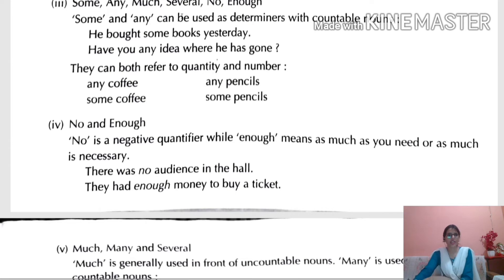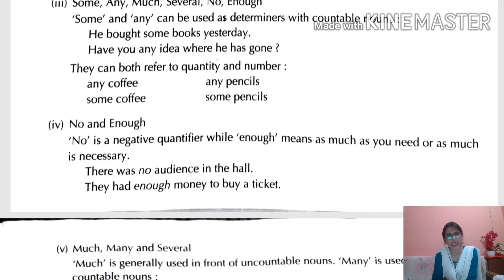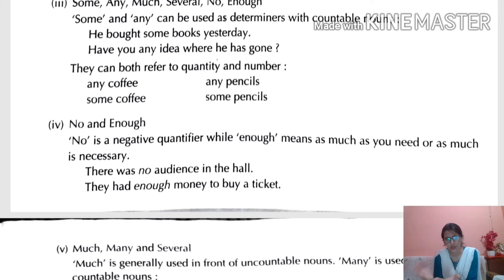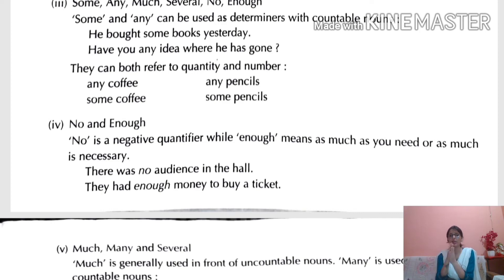Some and any can both be used as determiners with countable nouns. Example: 'He bought some books yesterday.' 'Have you any idea where he has gone?' They can both refer to quantity and number. 'No' is a negative quantifier, while 'enough' means as much as you need — sufficient. Example: 'There is no audience in the hall.' 'They had enough money to buy a ticket' — they had sufficient money.